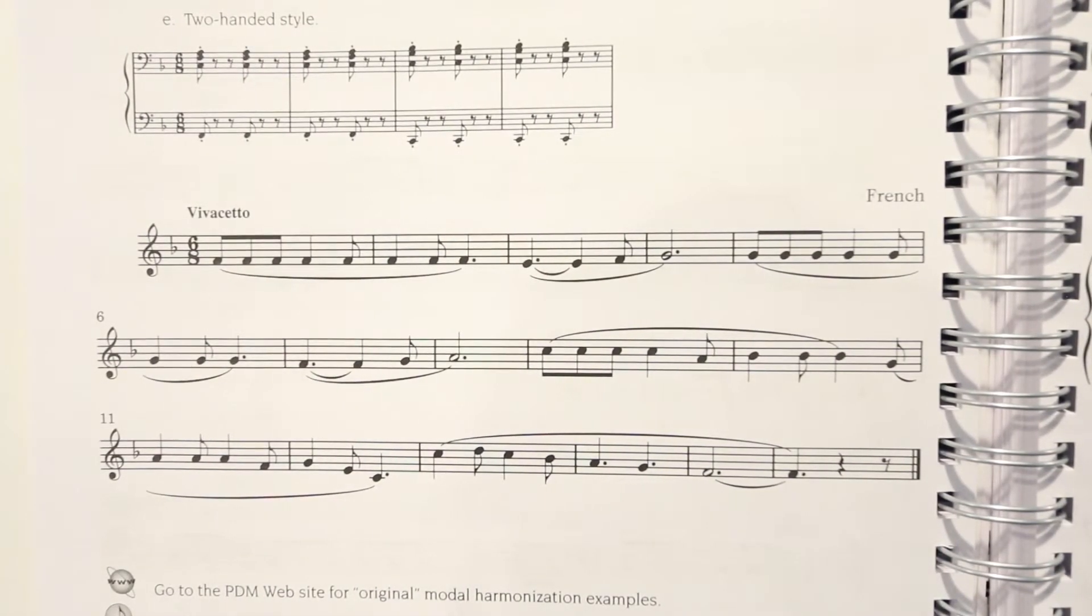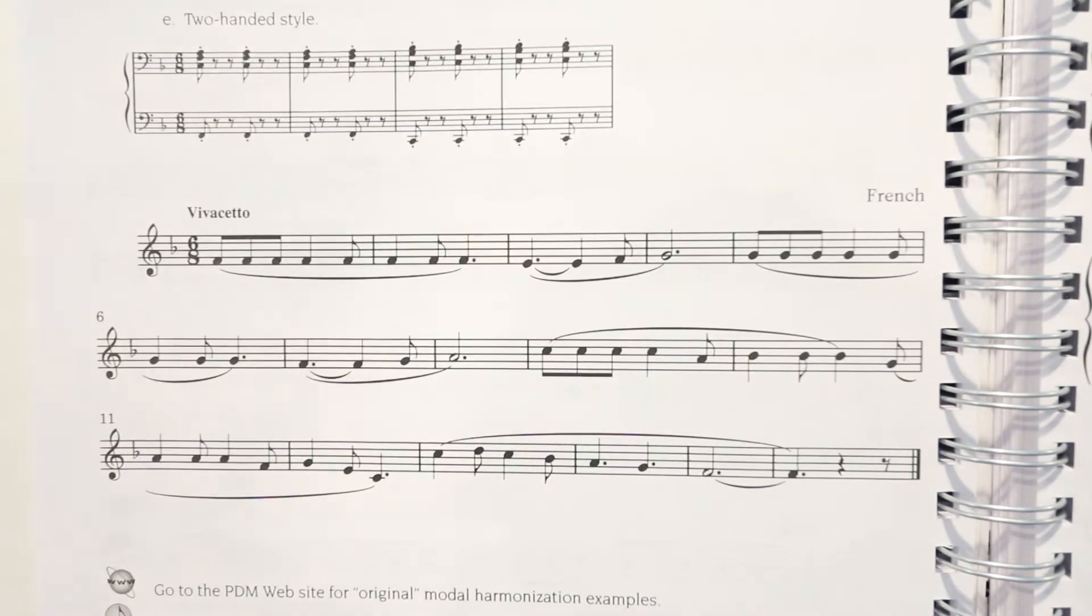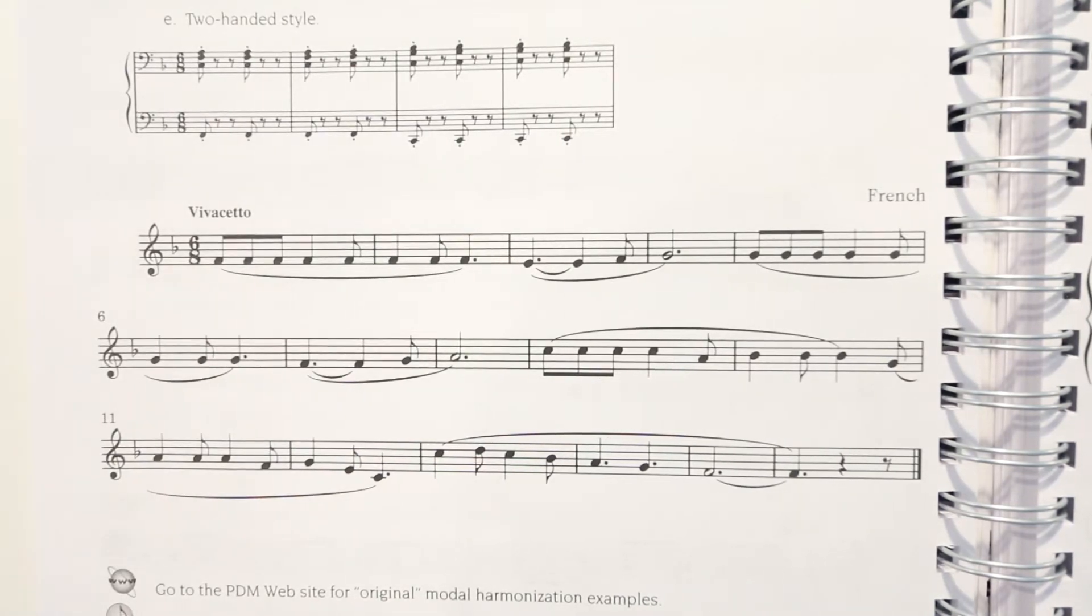Last but not least, harmonization example E. This is another two-handed accompaniment style. The only difference here is that the chords this time are not indicated. So let's go through and analyze the chords here.